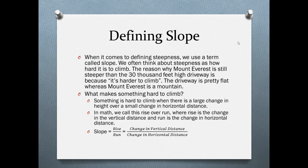A driveway is pretty flat, whereas Mount Everest is a mountain. What makes something hard to climb? Something is hard to climb when there's a large change in height over a small change in horizontal distance. In math, we call this rise over run, where rise is the change in the vertical distance, and run is the change in horizontal distance. The equation for slope is: slope equals rise divided by run.